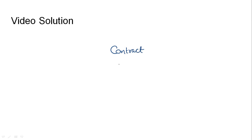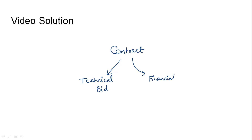Before awarding a contract, there are two stages that a contractor needs to clear. The first stage is the technical bid and the second stage is the financial bid. A technical bid contains certain documents such as: